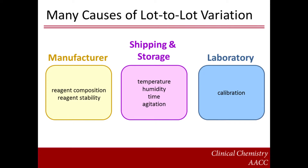The causes of lot-to-lot variation can be divided into those associated with the manufacturing process, those that are due to inappropriate transport and storage of the reagent, and those that occur as a result of laboratory error. For example, a manufacturer may change the process that it uses to produce a particular reagent antibody, and this may inadvertently cause slight alterations in the composition or stability of the reagent.